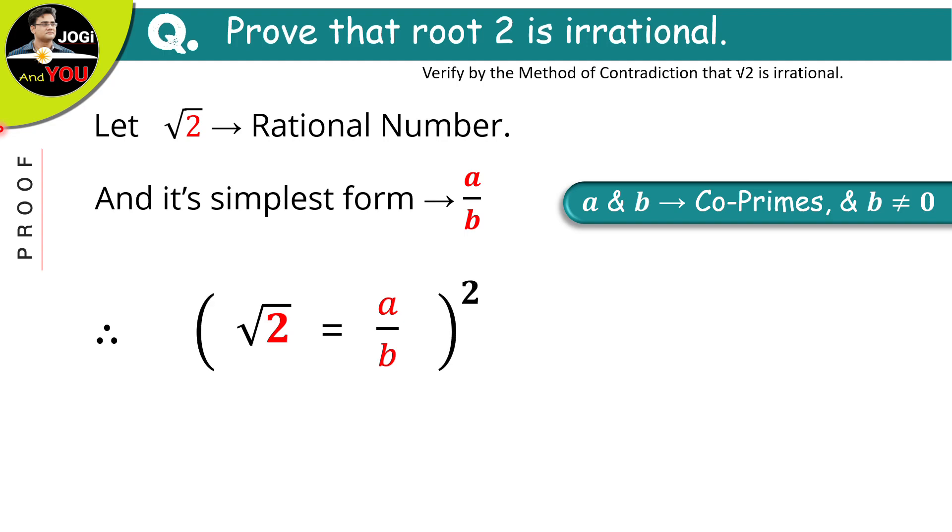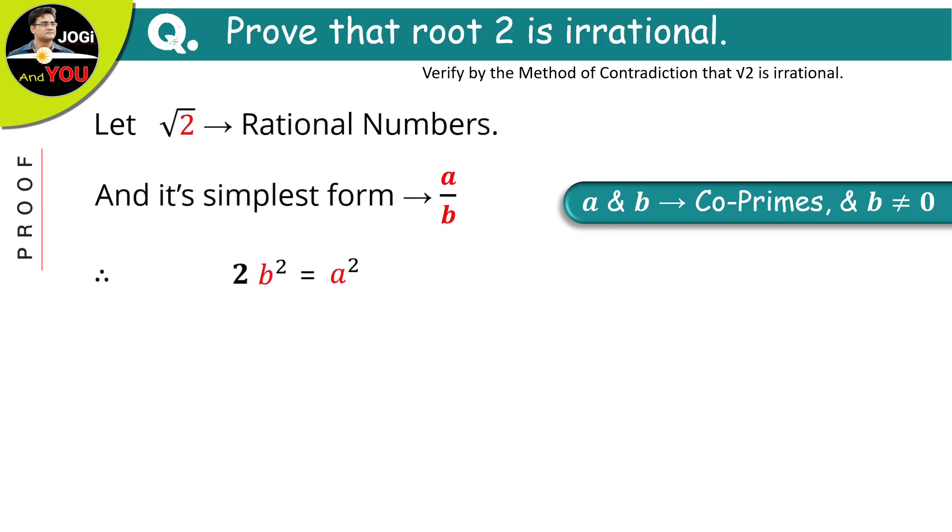So, we can write this as root 2 is equal to a over b. Do square both the sides and we get 2 is equal to a square over b square. Just transfer this b square to the left side and this is our equation number 1.